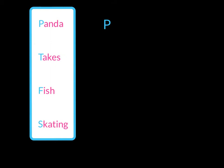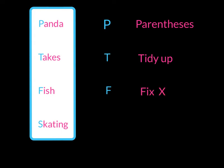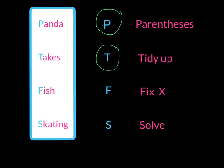The P in panda stands for parentheses. The T in takes stands for tidy up. The F in fish stands for fix X. The S in skating stands for solve. What do I mean by these steps? Well, first, if we see any parentheses, we would have to distribute. Then we would tidy up — we would simplify on either side of the equal sign. Then we would fix X. And by the time we've done all of that, we would have a two-step equation that we can now solve.